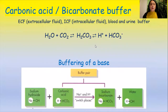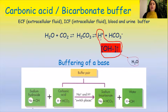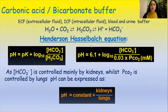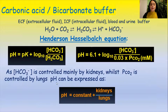If concentration of OH- ions increases, they start to combine with H+ ions, producing water molecules. That's why H+ concentration decreases and equilibrium shifts to the right side, favoring the forward reaction. The pH of the bicarbonate buffer can be calculated using the Henderson-Hasselbalch equation: pH equals pK plus the logarithm of the concentration of HCO₃⁻ divided by concentration of H₂CO₃. The concentration of HCO₃⁻ ions is controlled mainly by kidneys, whilst partial pressure of CO₂ is controlled by lungs. So pH can be expressed as pH equals a constant plus kidneys over lungs.